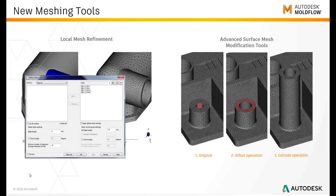We also have the ability to make changes to the surface mesh. Here I selected an area of a boss that looks very bad for injection molding. I took the interior surface of that particular mesh, made a modification to it, then made a quick selection of the top surface and actually made an extrude of that surface. So rather than having to go back to the CAD system, you can make those modifications directly on the surface mesh.